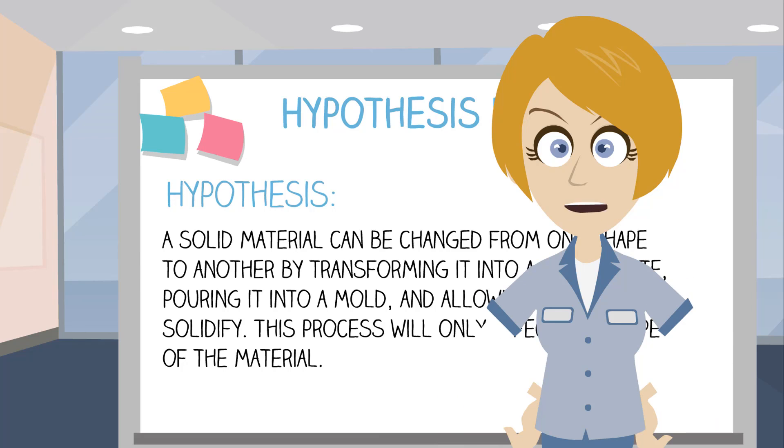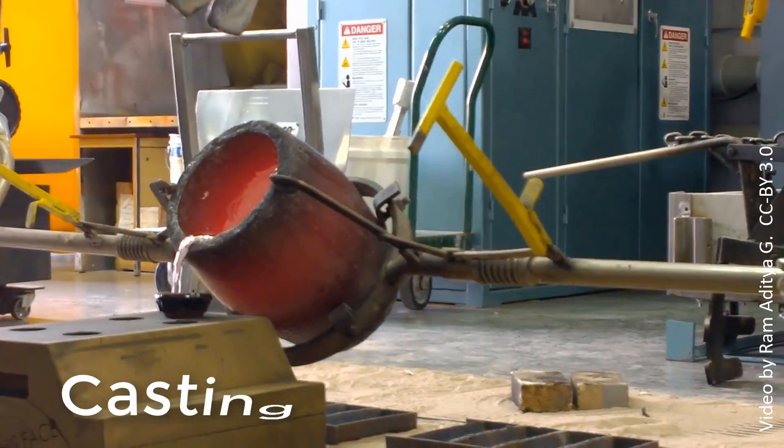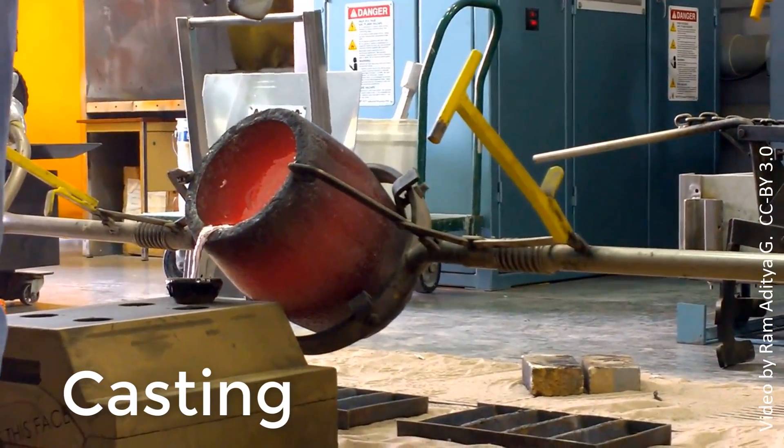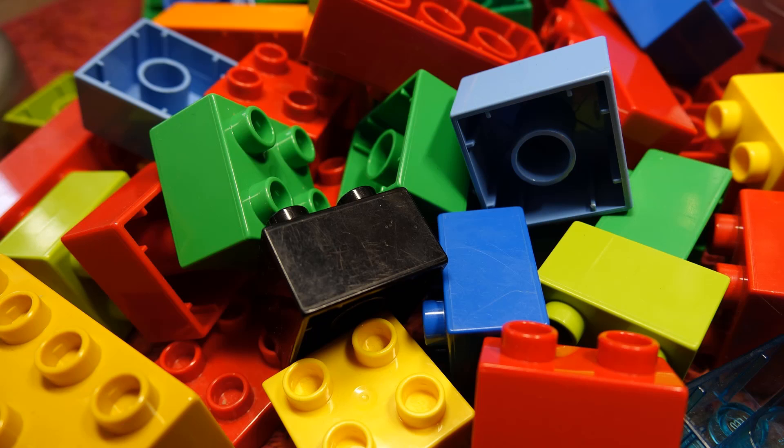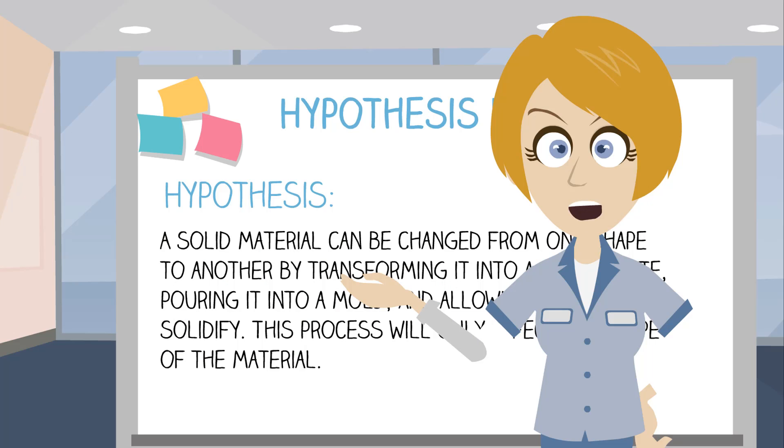So now what can we conclude from our experiment? The first part of our hypothesis was proved correct. We demonstrated that a material can be reshaped by melting it, using a mold to form a new shape. In engineering, this process is known as casting, and it's used to form many different structures, from simple toy building blocks to complex engine components. It's quite a convenient process for making complicated structural shapes.